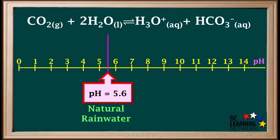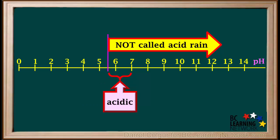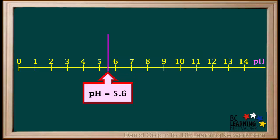Because natural rainwater has a pH as low as 5.6, rain with any pH 5.6 or above is not called acid rain, even though a pH of 5.6 to 7 is acidic. Rain with a pH below 5.6 is called acid rain because it is more acidic than rain naturally is.